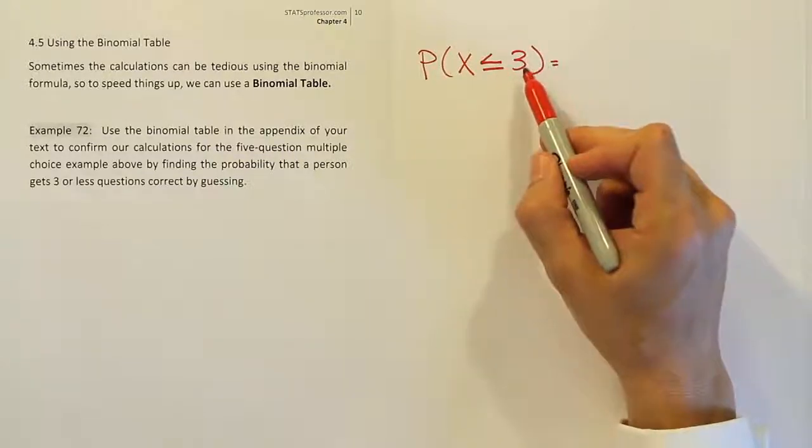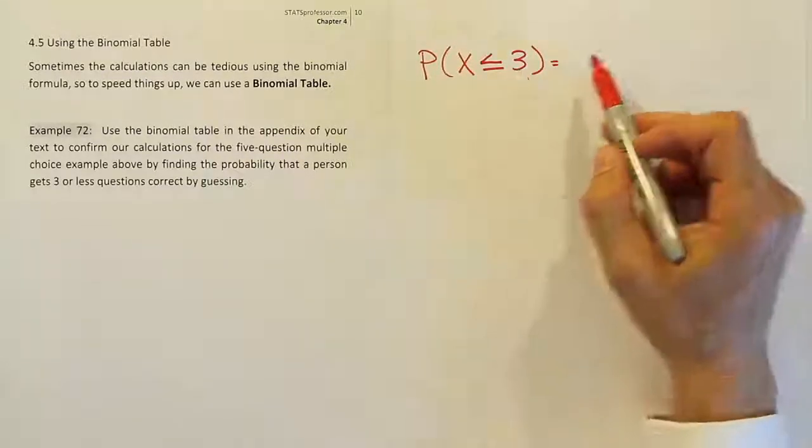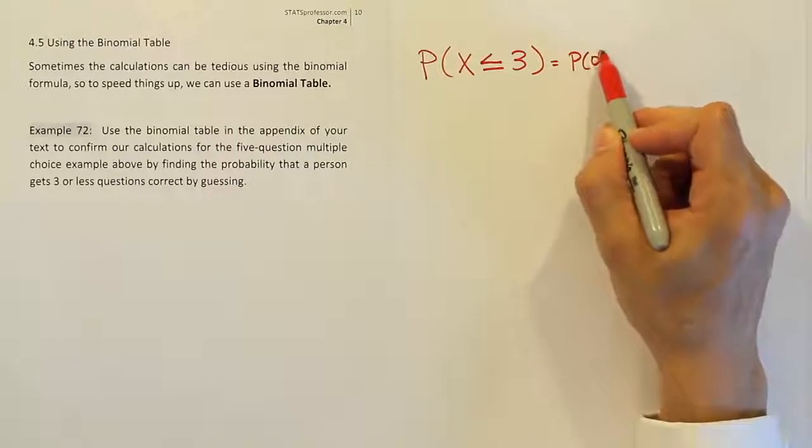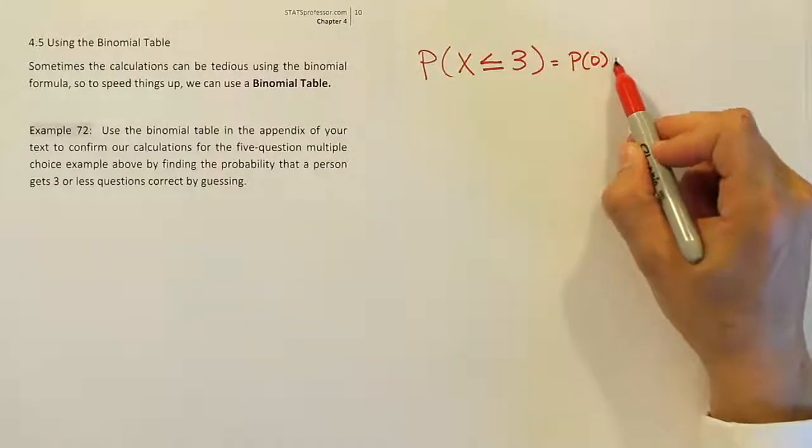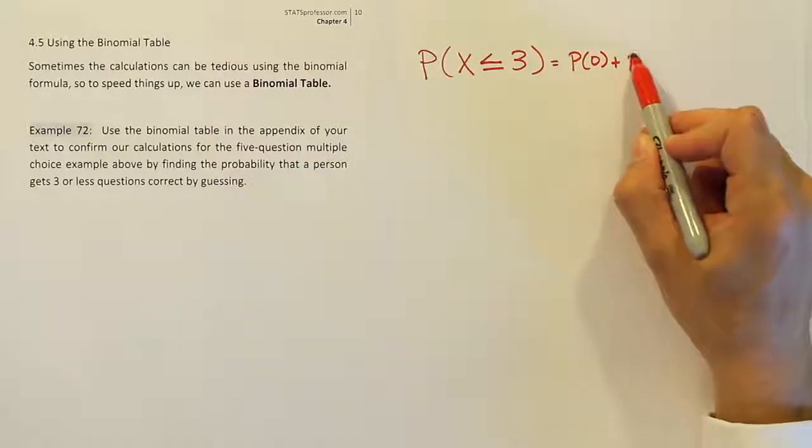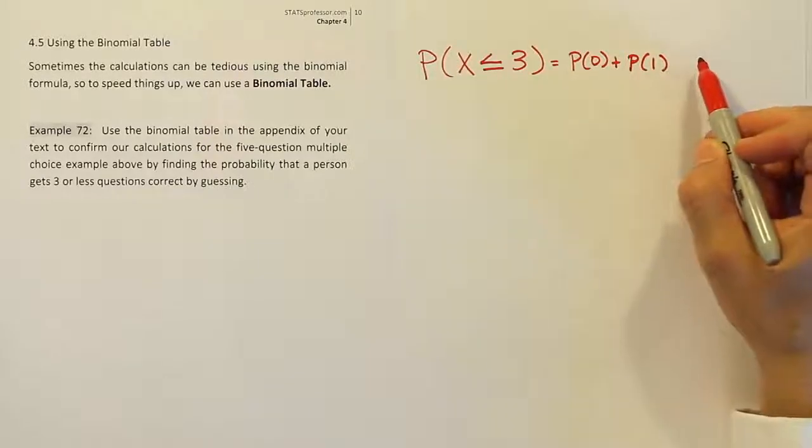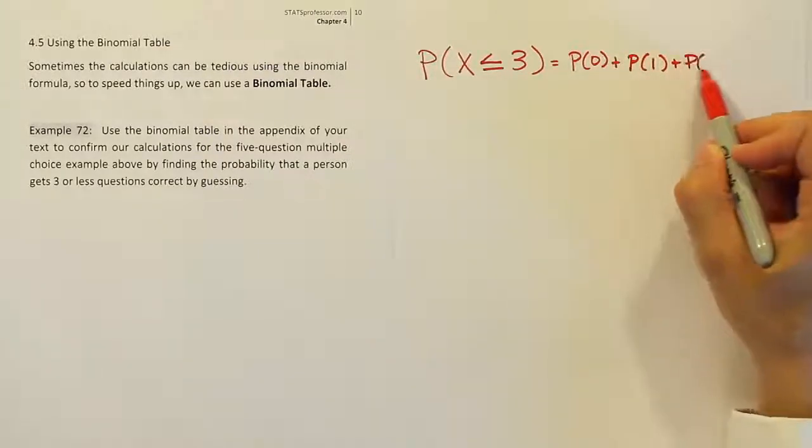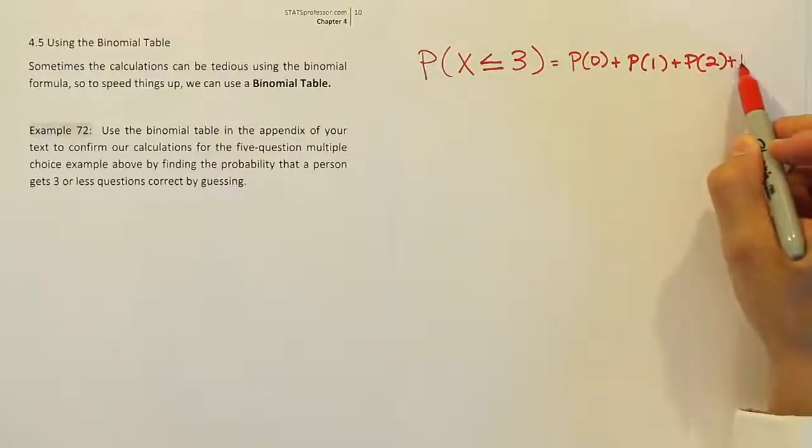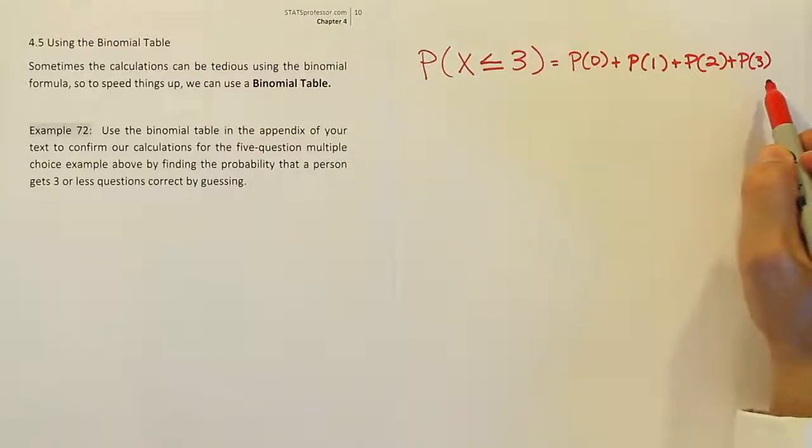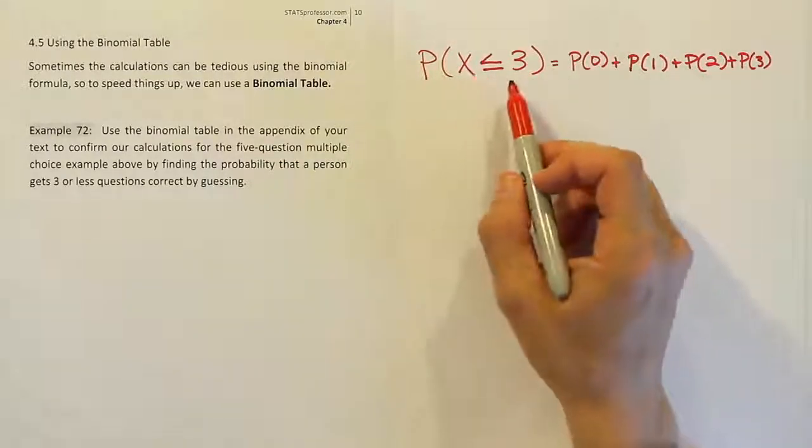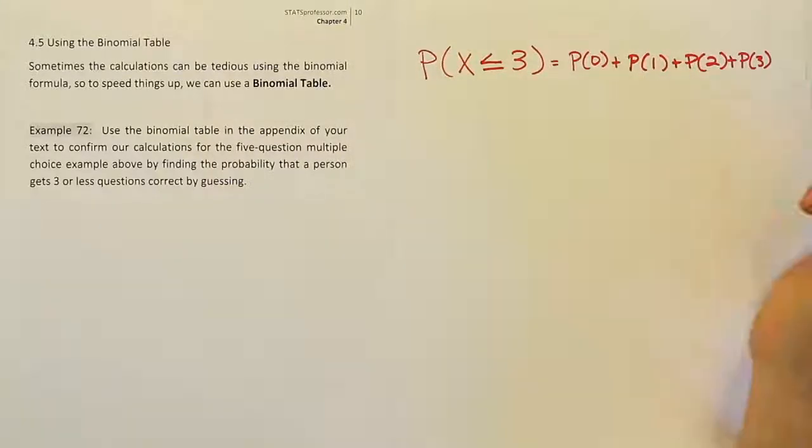But basically what is this saying? It's saying that it's the probability that x is zero, plus the probability that x is one, plus the probability that x is two, plus the probability that x is three. That's the same as saying the probability that x is less than or equal to three. It's the sum of all those different scenarios.